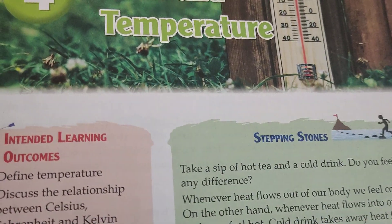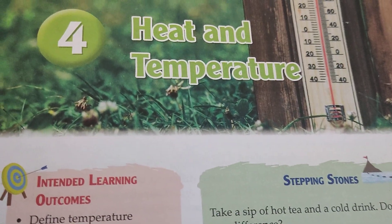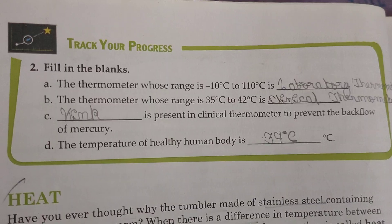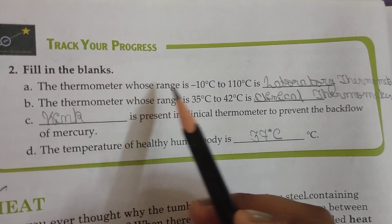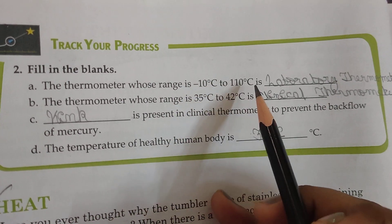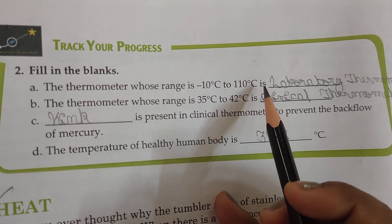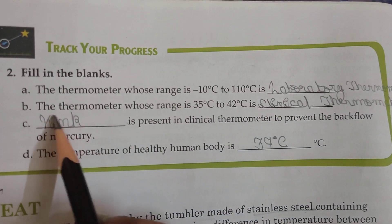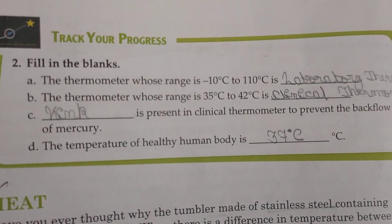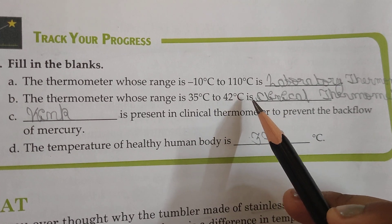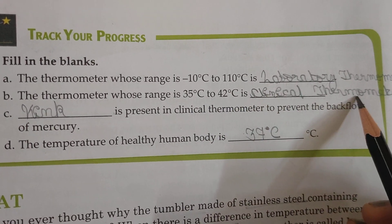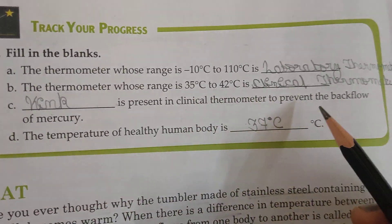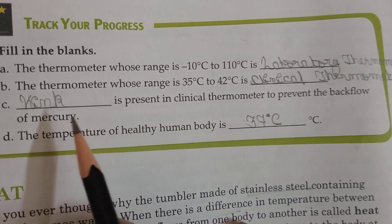Today we are going to write all the fill-ups of Heat and Temperature, chapter number 4. The thermometer whose range is minus 10 degree centigrade to 110 degree centigrade is the laboratory thermometer. The thermometer whose range is 35 degree centigrade to 42 degree centigrade is the clinical thermometer. A kink is present in the clinical thermometer to prevent the backflow of mercury.